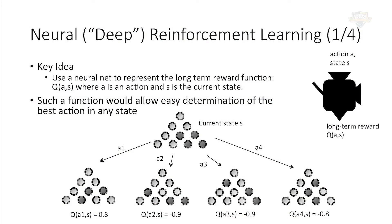Why would we want to do that? Because if we could do it, it would totally solve our problem. If I have a state and four different possible peg jumps — four different actions — and I have the Q function, I could evaluate it for each one of those actions given the particular state. I'd get back a number telling me how well that approach should do over the long term. If I have three negative numbers and one positive one, I'll take the positive one. You always just take the best number and your play is optimal.